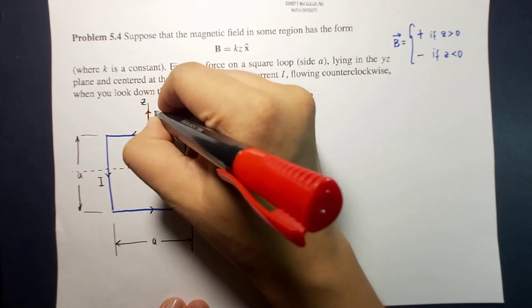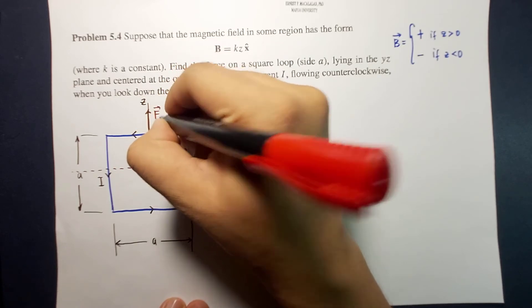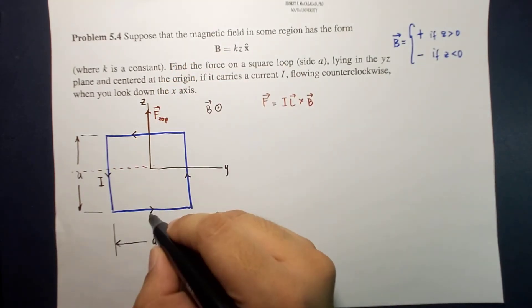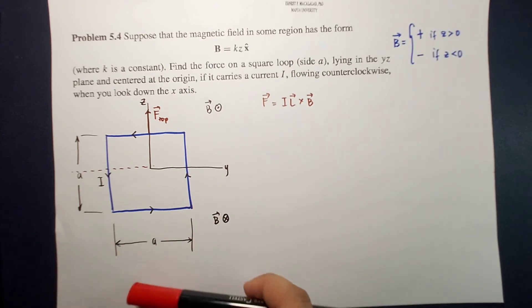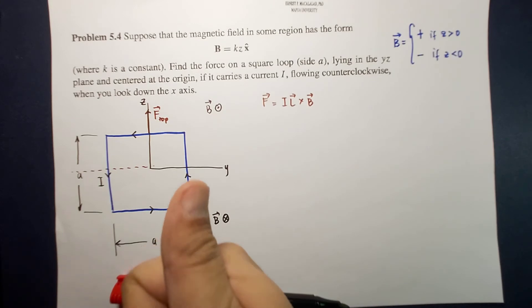Consequently, the F for below. So because I cross B, bottom is upward.